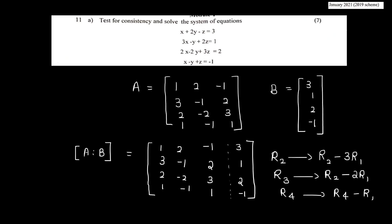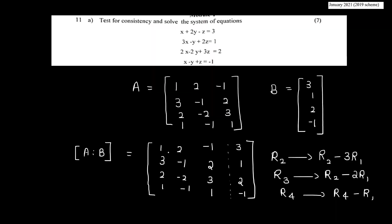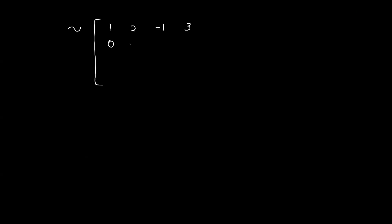Row 1 remains: 1, 2, minus 1, 3. Applying R2 minus 3R1: the new second row entries compute to 0, then minus 1 minus 6 equals minus 7, then 2 minus 3 equals minus 3 giving 5, and 1 minus 3 giving minus 8. So the new R2 is: 0, minus 7, 5, minus 8.